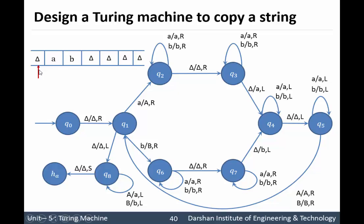First of all our head pointer is pointing to the blank symbol delta, so no need to replace delta by anything. Replace delta by delta and move to the next symbol. Now our next symbol is 'a'. According to our logic we will convert this 'a' into capital 'A', so replace 'a' by capital 'A' and move to the right direction. Now we have to bypass all 'a' and 'b', so bypass this 'b': 'b' will be replaced by 'b' and move to the right direction. Whenever we encounter the delta that means it is the right end of the string. So delta will be replaced with delta and move to the right direction. In the right direction we now have a blank symbol, so instead of this blank symbol we paste our small 'a'. From state q3 to state q4, delta will be replaced by 'a'.